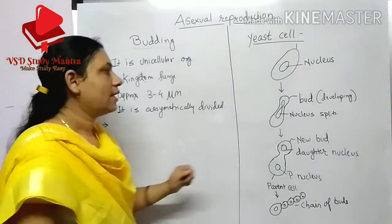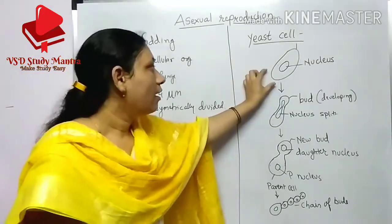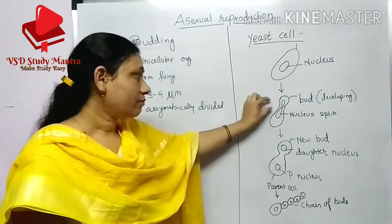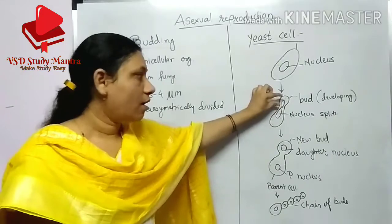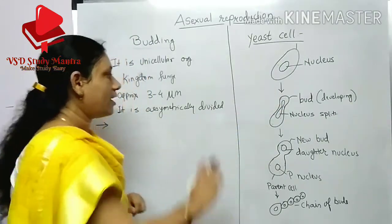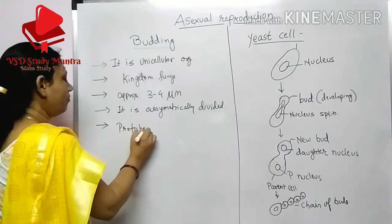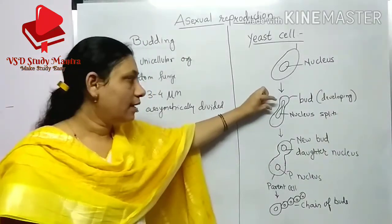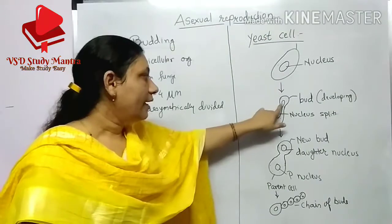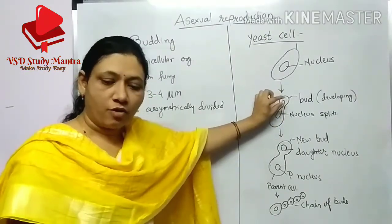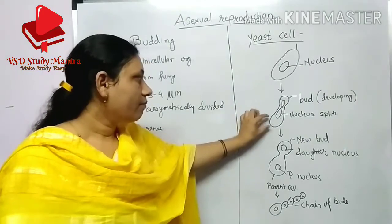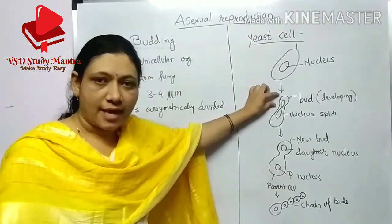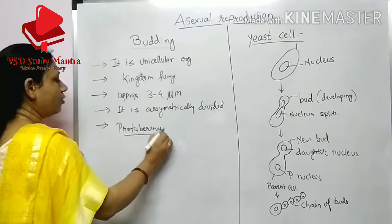Now shifting to the diagram: this is a yeast cell with a nucleus. You can see a protuberance forming on the yeast cell — this outgrowth is known as a protuberance, which occurs as the nucleus expands slightly. The parent cell is shown here at full size with this protuberance developing on it.